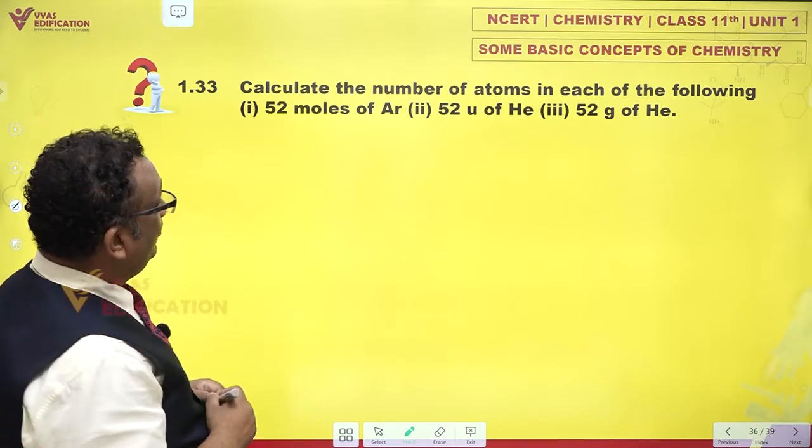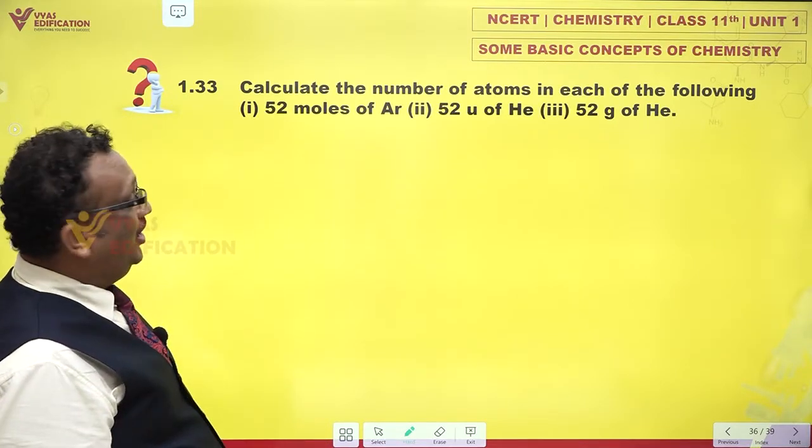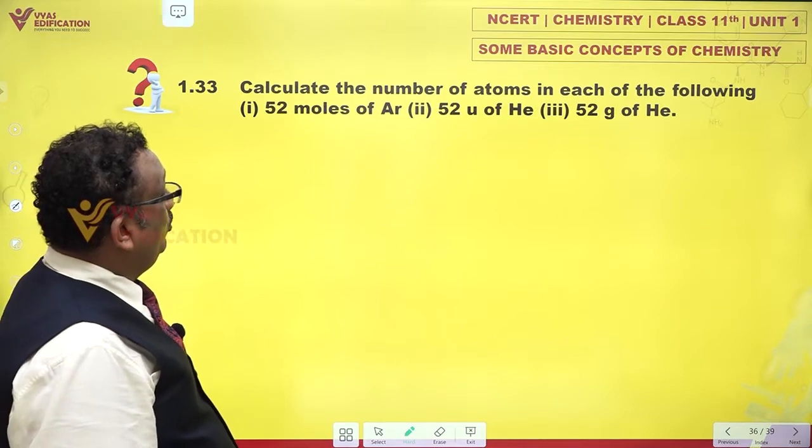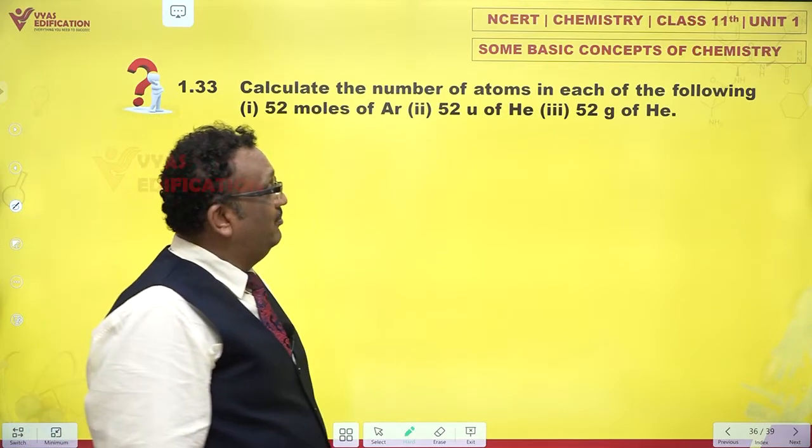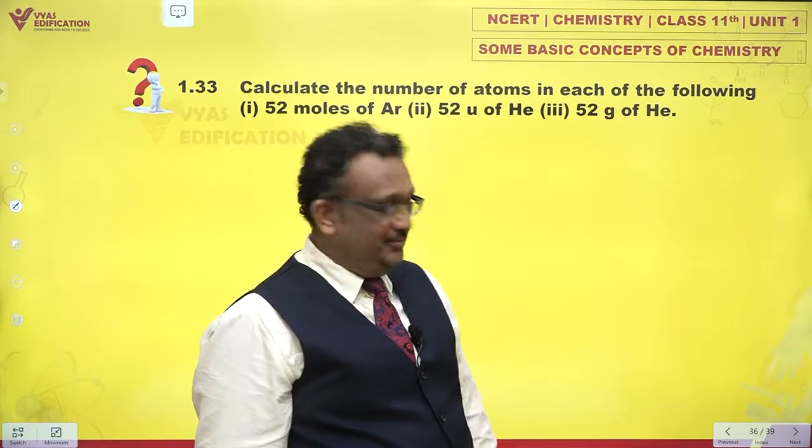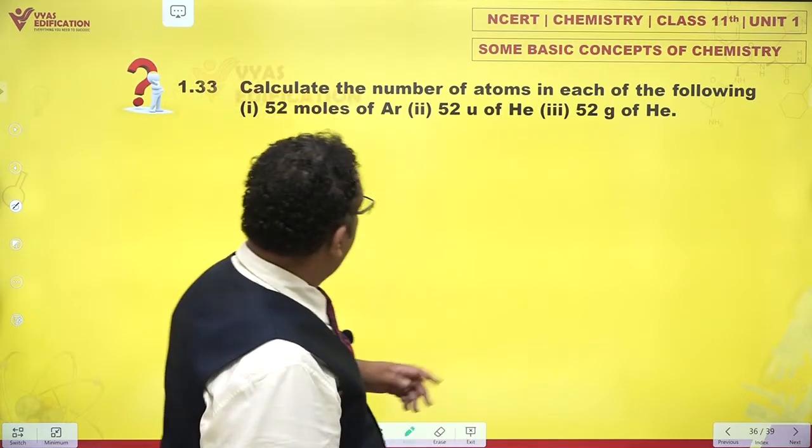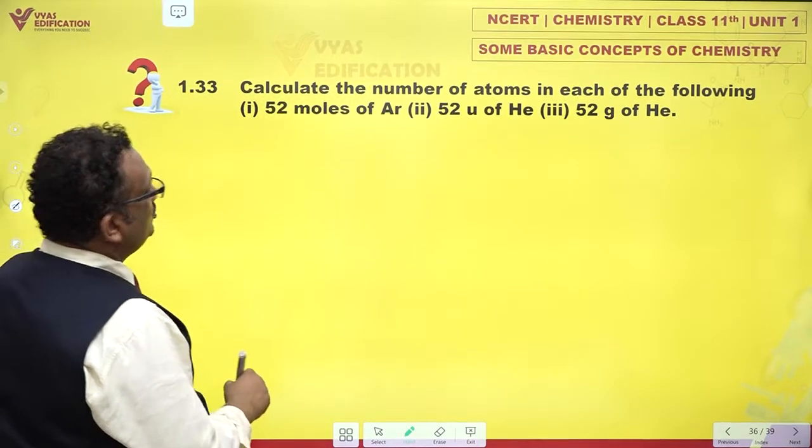Calculate the number of atoms in each of the following: you have 52 moles of argon, 52 u that is amu of helium, and 52 grams of helium. Let's try that out.